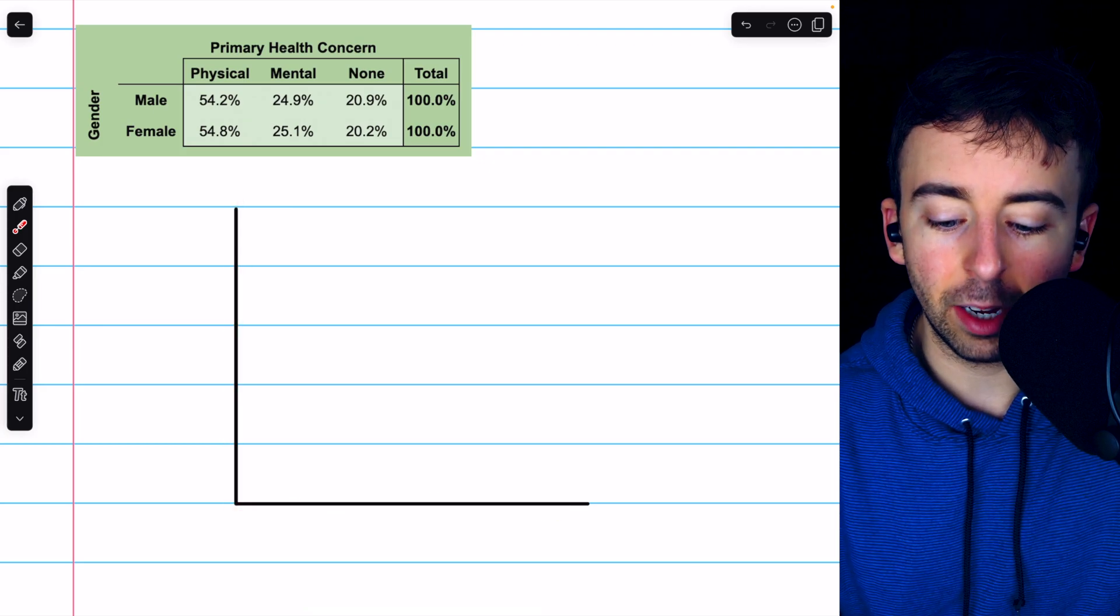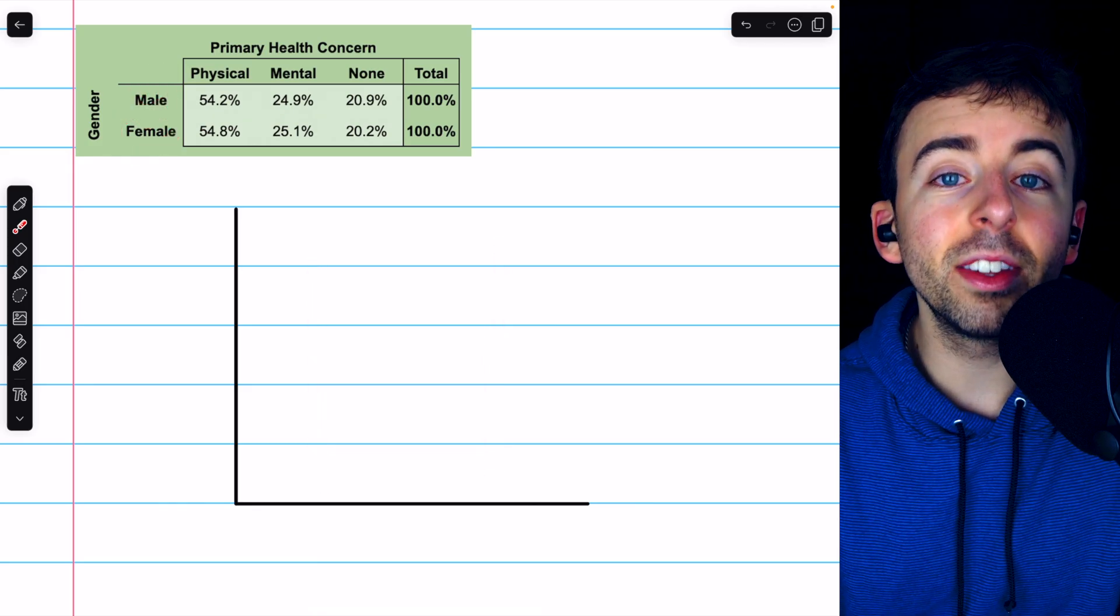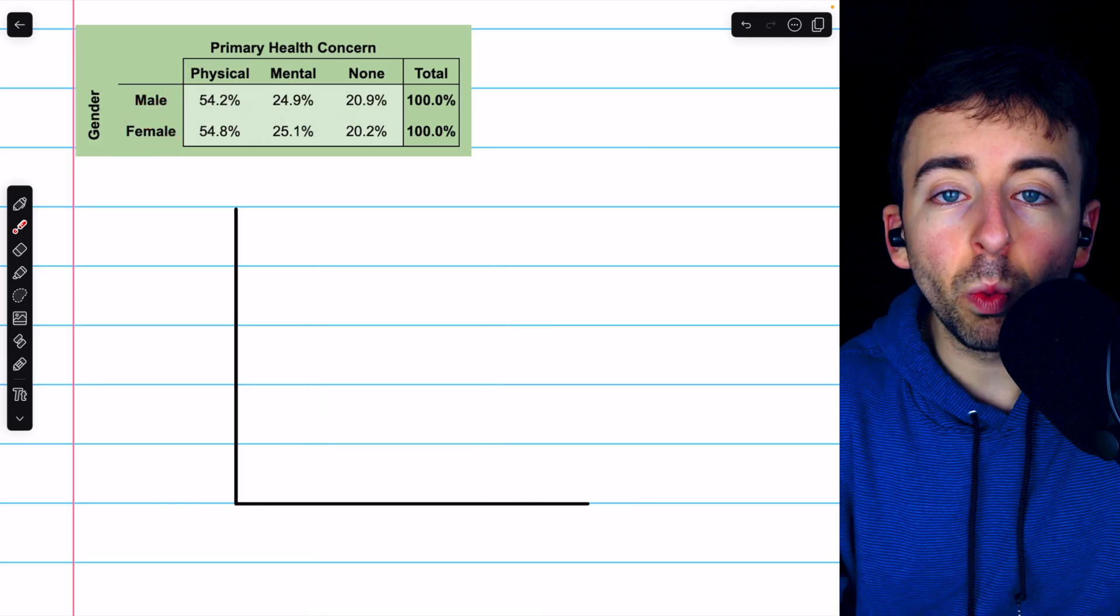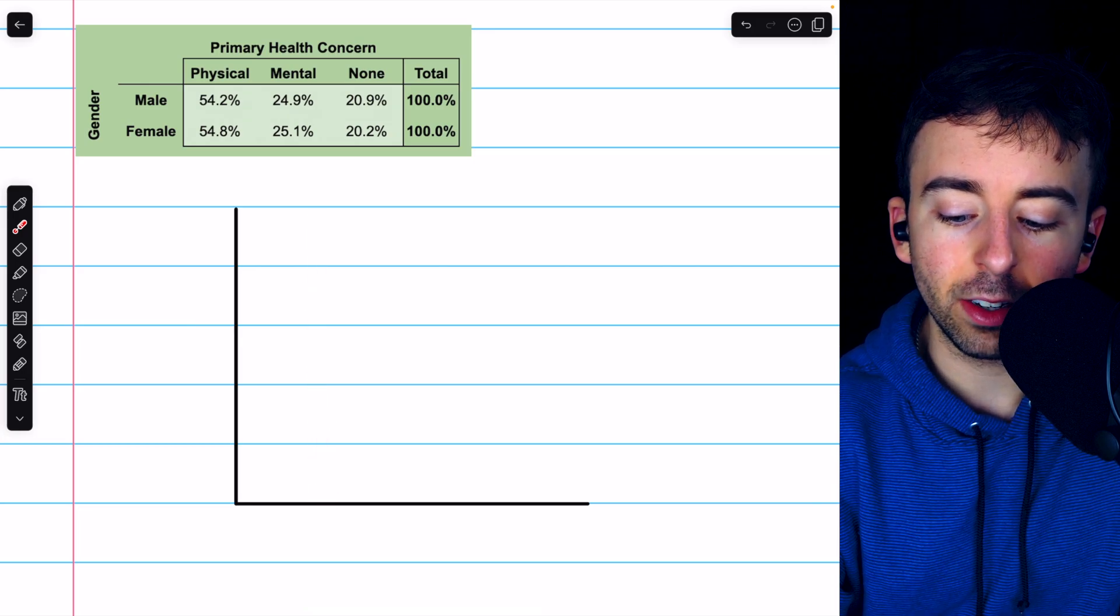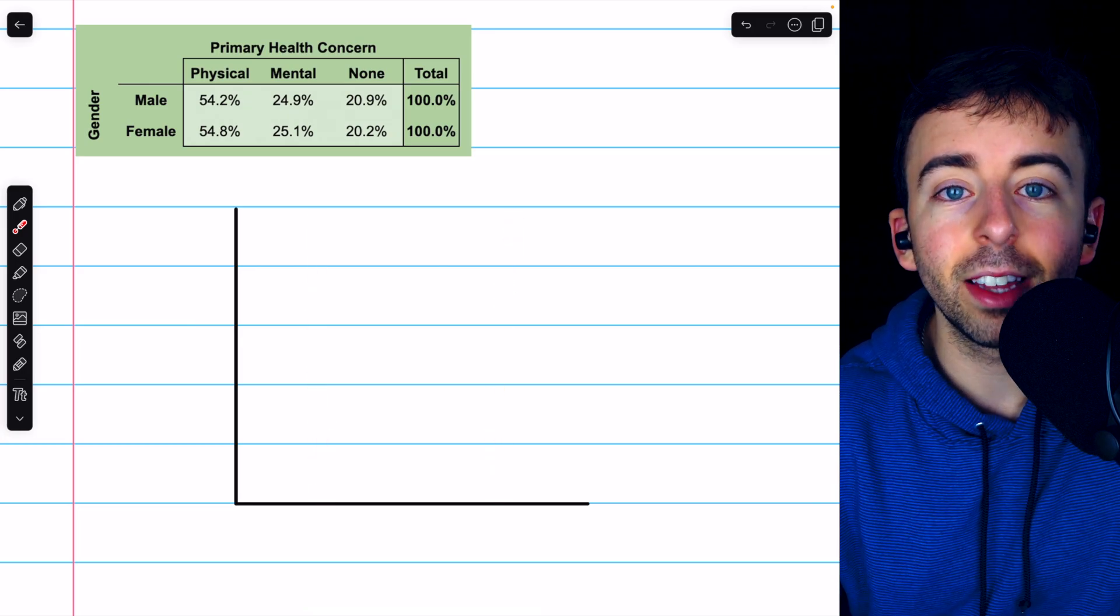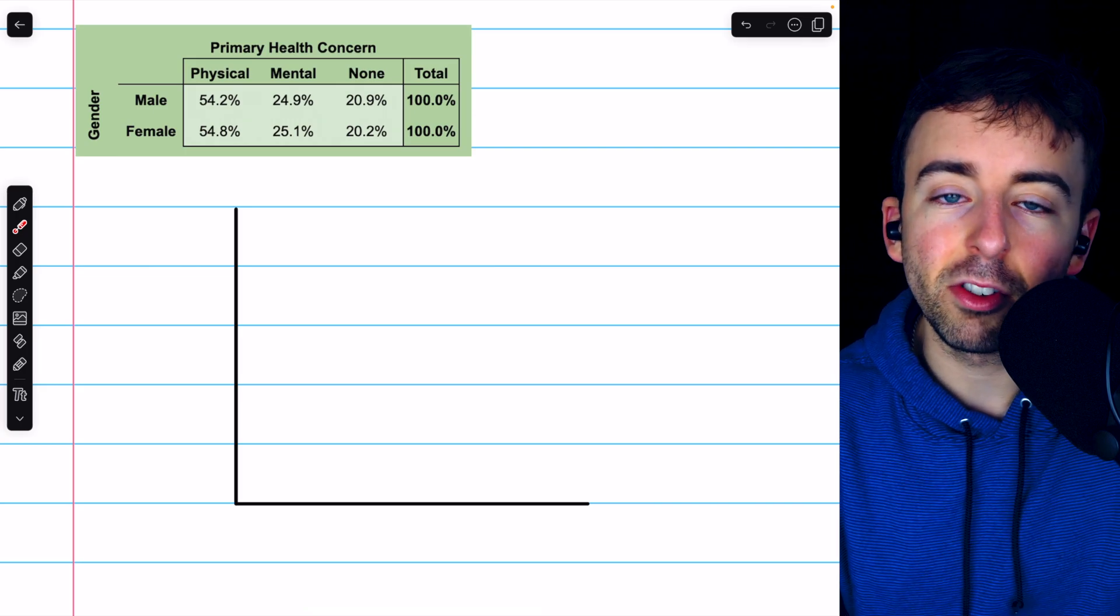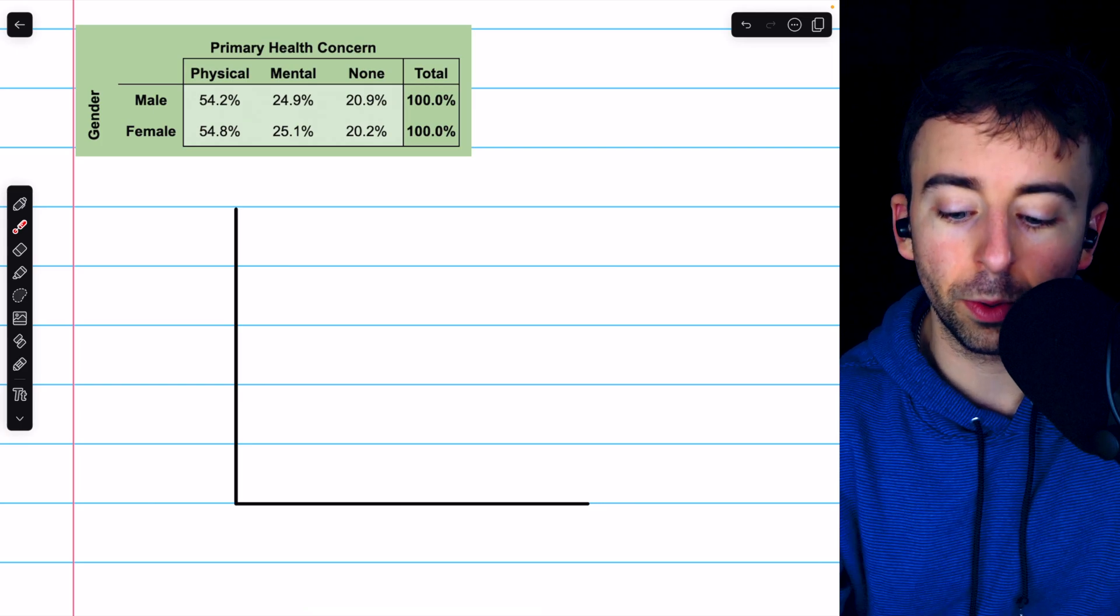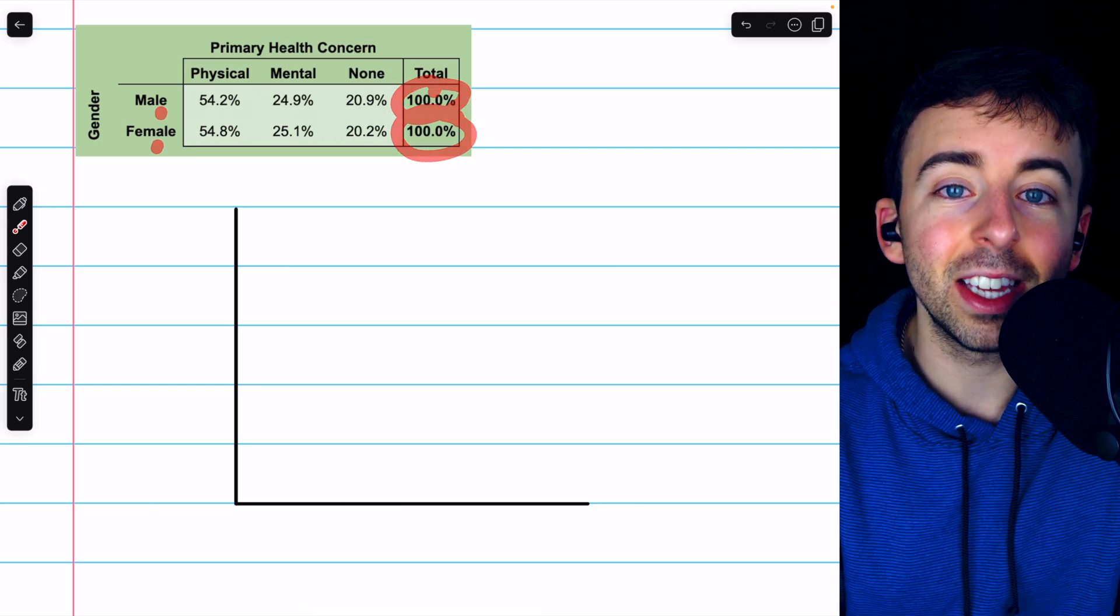The nice thing about the segmented bar chart is we can put both bars, one for males and one for females, on the same chart. Now, these work like pie charts in that each bar will represent all of its group, all males and all females. That means each bar will have the same height. The height of each bar corresponds to 100%, 100% of one group and 100% of the other group.